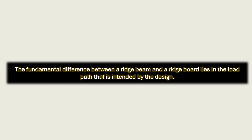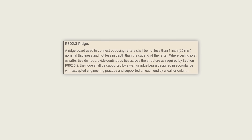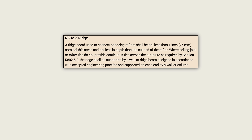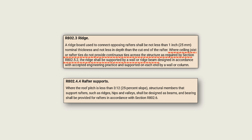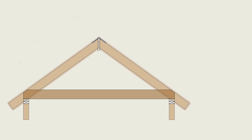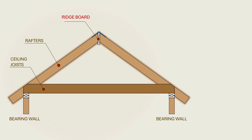The fundamental difference between a ridge beam and a ridge board lies in the load path that is intended by the design. That is why Section R802.3 of the 2024 International Residential Code requires ridge beams to be used where ceiling joists or rafter ties do not provide continuous ties across the structure. Similarly, Section R802.4.4 specifies that where the roof pitch is less than 3 to 12, structural members that support rafters such as ridges shall be designed as beams. The code language anticipates conventionally framed roofs with a ridge board, and therefore a ridge beam is required where conventional construction limits are not met. It seems the best route is to start with conventionally framed roofs with a ridge board, and then allow their limits to take us organically to ridge beams.